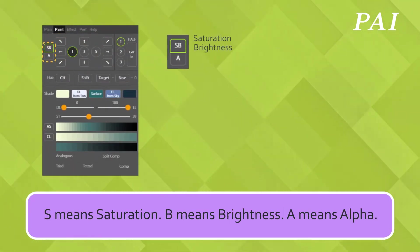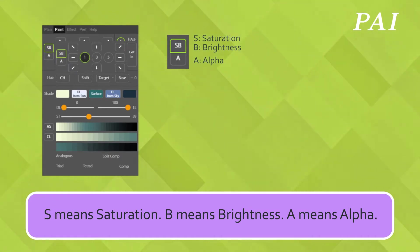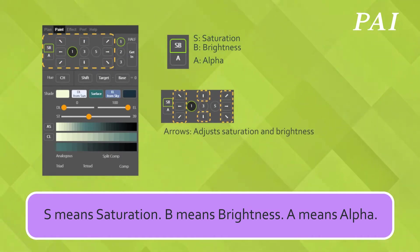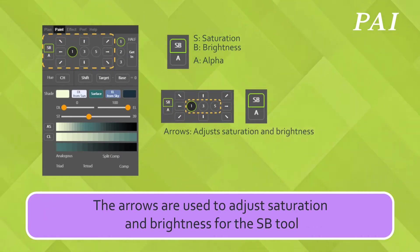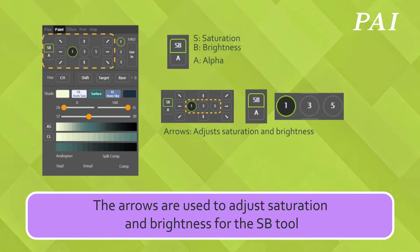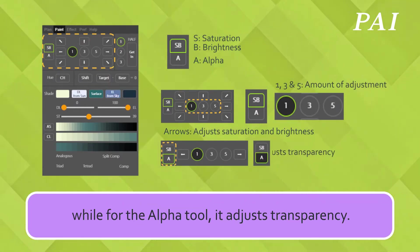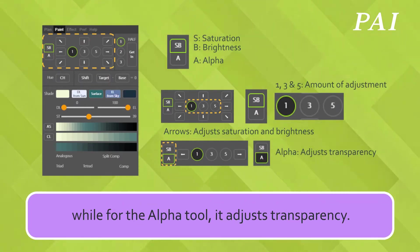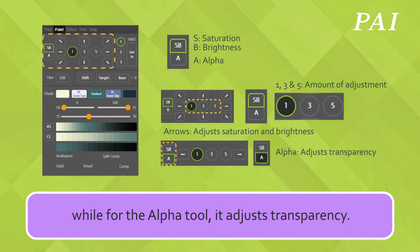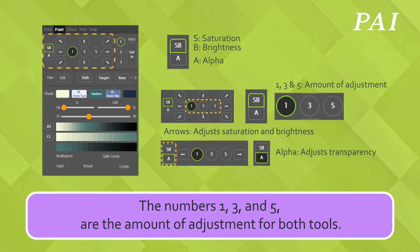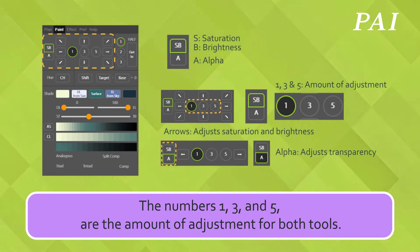S means saturation, B means brightness, and A means alpha. The arrows are used to adjust saturation and brightness for the S tool, while for the alpha tool, it adjusts transparency. The numbers 1, 3, and 5 are the amount of adjustment for both tools.